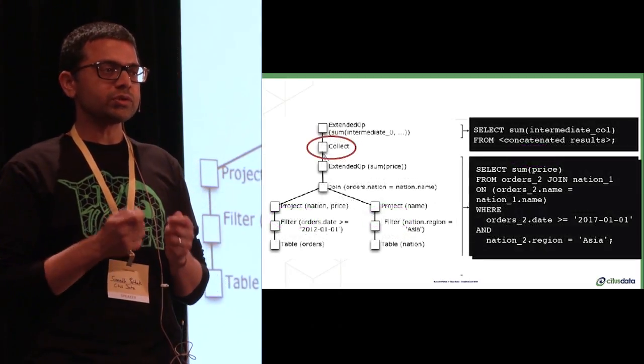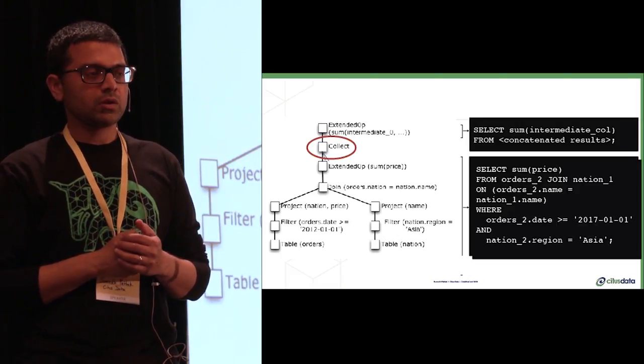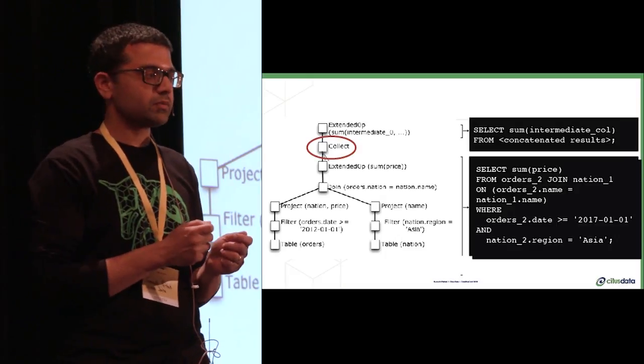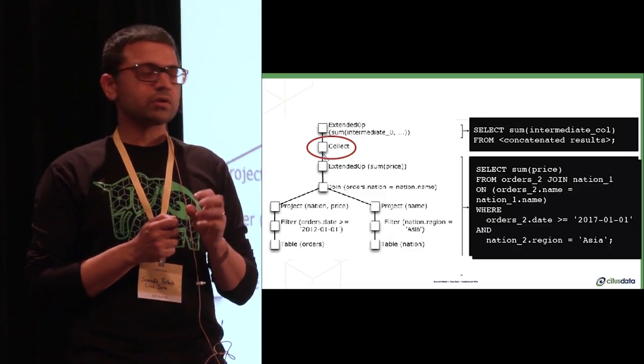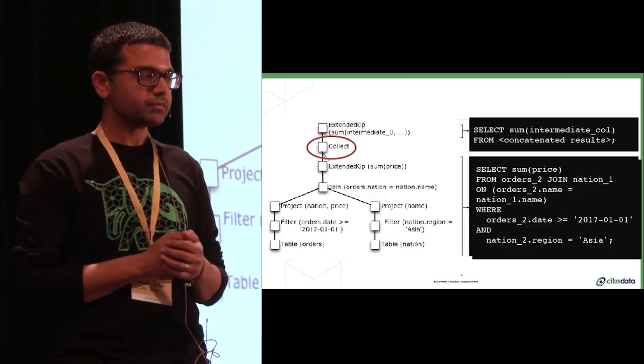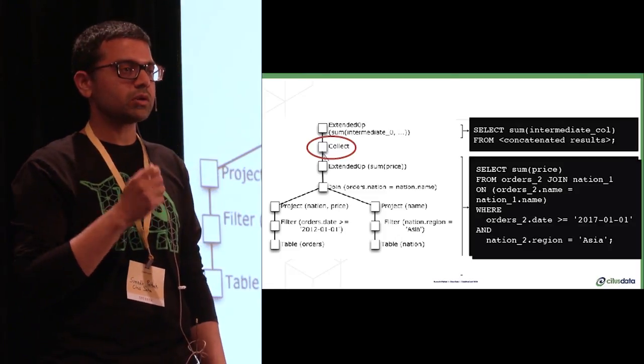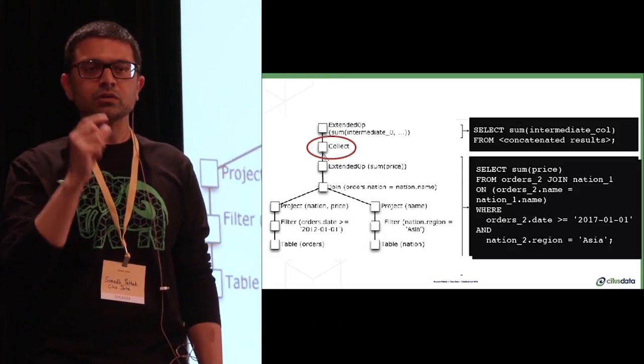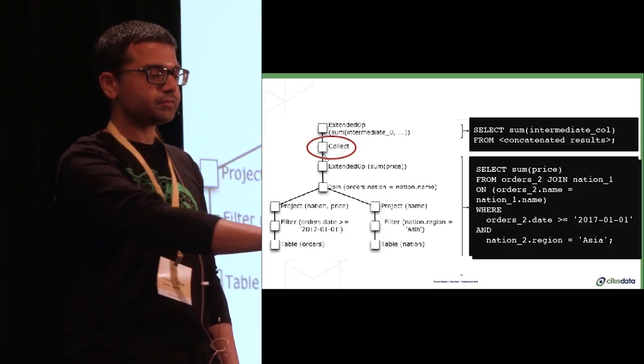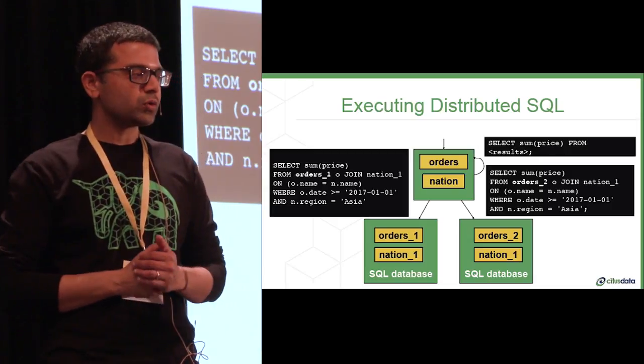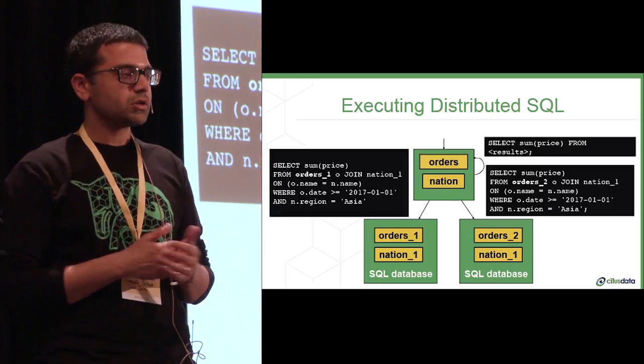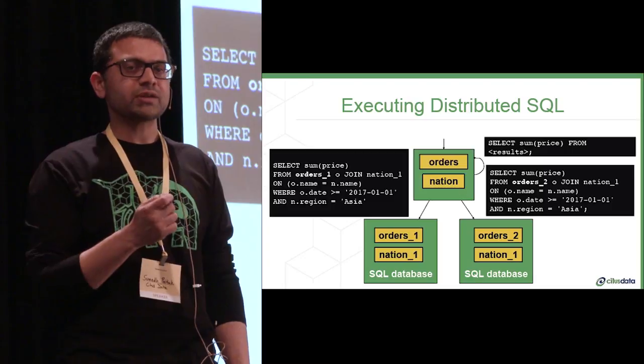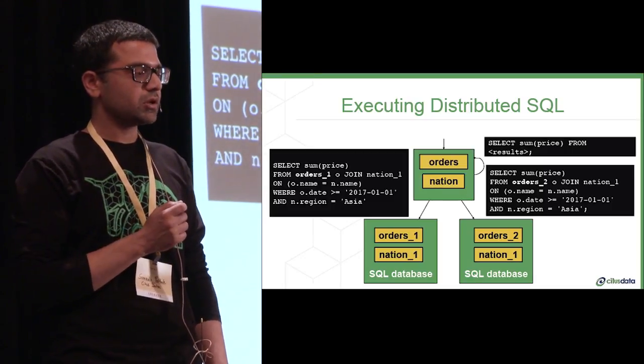But how do we actually execute this relational algebra tree? Well, similar to the way we can take SQL and convert that into relational algebra, we can go the other way as well. So we can take a tree or fragments of the tree and convert that back into SQL. In this case, we can take everything below the collect operator, convert that into a SQL fragment, and run that on the worker nodes. And then everything above the collect node, and then run that on the coordinator. And as we noted before, each worker node is actually just a SQL database. So we can run these fragments natively on the worker nodes. And crucially, each worker node can then do its own secondary optimization, which is picking the right indexes or choosing the right join methods.